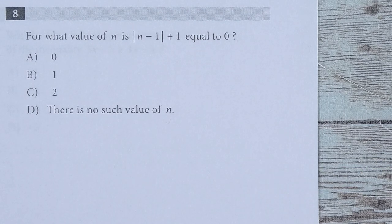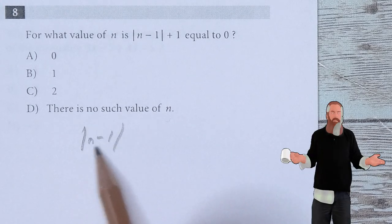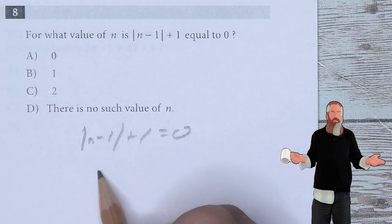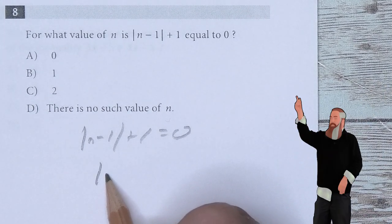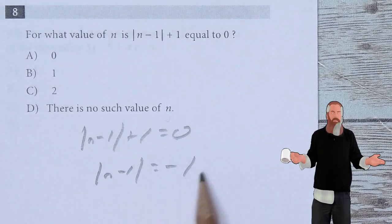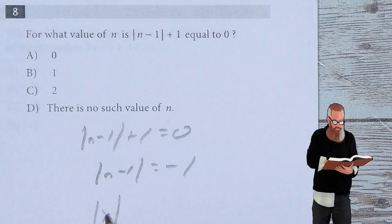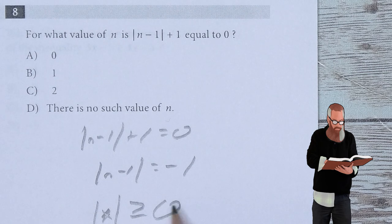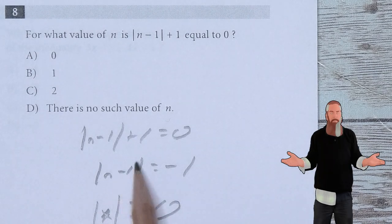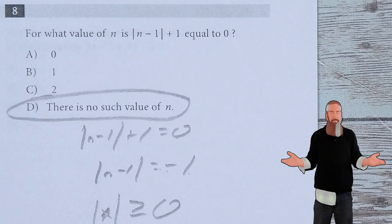For what value of N is the absolute value of N minus one plus one equal to zero? This means the absolute value of N minus one is equal to negative one. At this point, we have a problem because the absolute value of a number must be greater than or equal to zero, so it must be positive. There is no way I can solve this to get this negative answer. So there is no value for N.